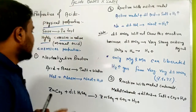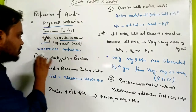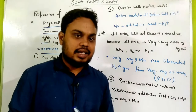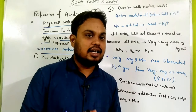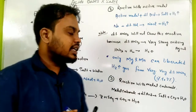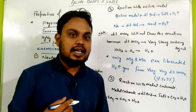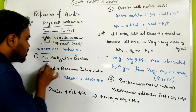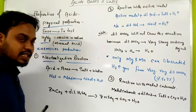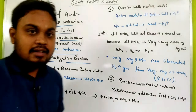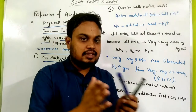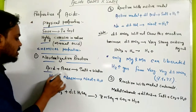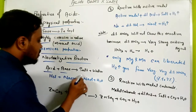Now for chemical properties — what is written here is sufficient for Class 10. The first chemical property is the neutralization reaction, which we have been studying since Class 7: when acid reacts with base, it forms salt and water. This is called a neutralization reaction.